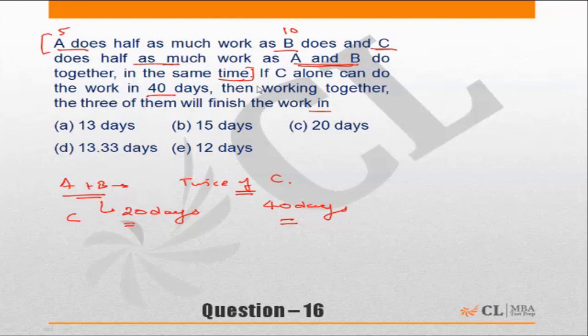So if C alone can finish the work in 40 days, then working together the three of them will finish the work in how many days. So A and B can finish the work in 20 days.